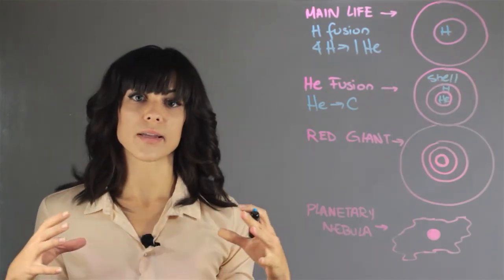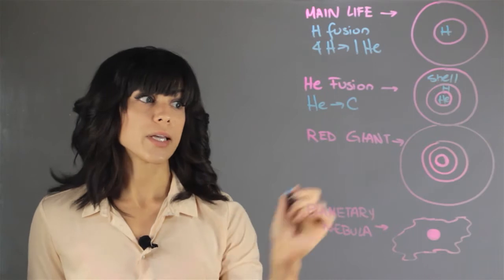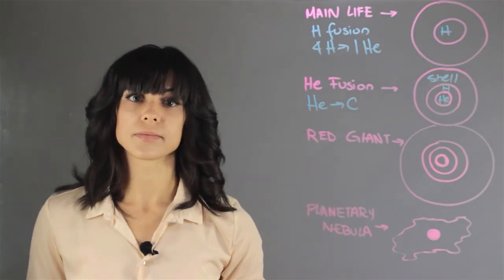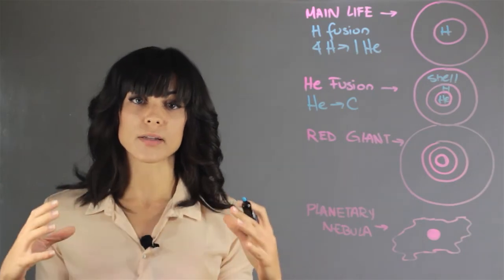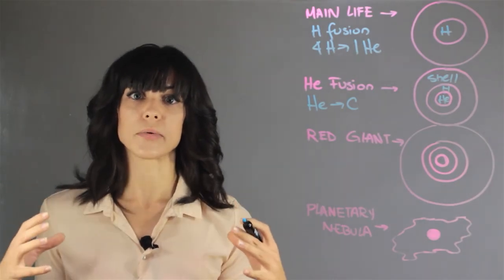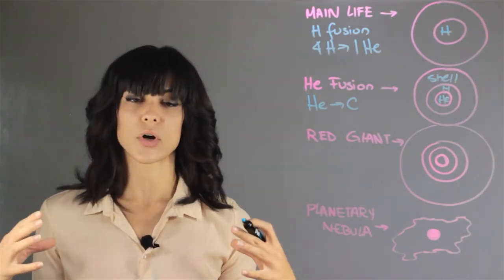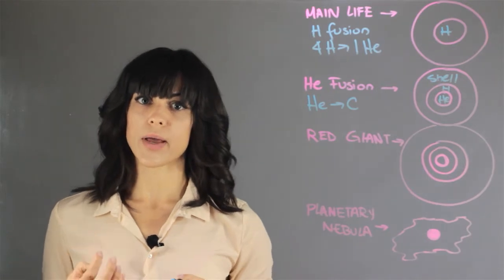This will continue to expand and expand until we get to the phase of a red giant. Here a red giant is where the outer layers have expanded so much that they've actually cooled down. So the outer layers of the star are very cold and they appear red.